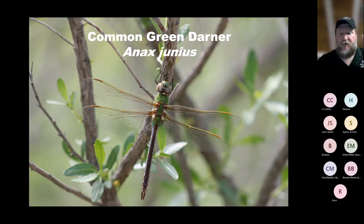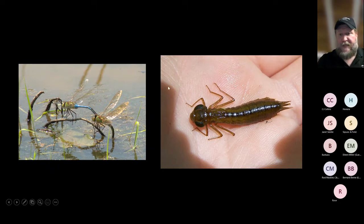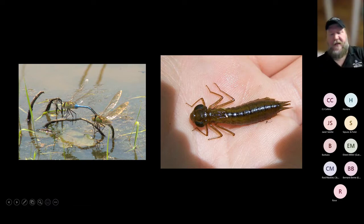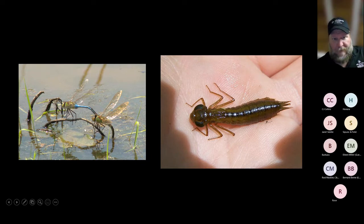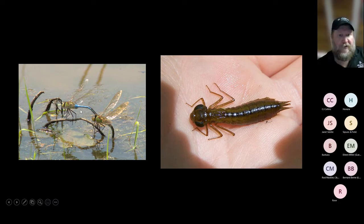This is the nymph underwater — fairly good-sized, with small wing buds, probably one more molt before becoming an adult. Here you can see a male common green darner mate-guarding the female — he's clasped behind her head; they're done mating. Her abdomen is submerged into the water as she lays eggs, while he tries to prevent her from mating with other individuals.